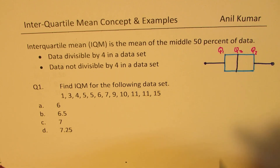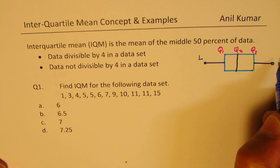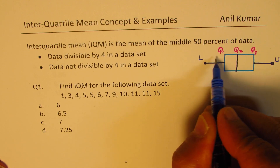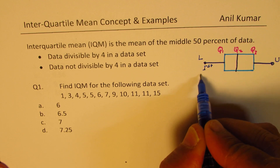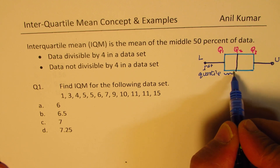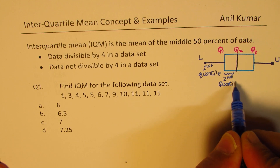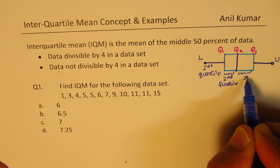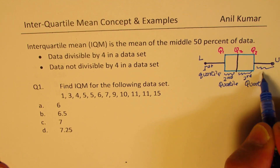In these quartiles, we see that this portion is the first quartile — from the lowest to Q1 — that is our first quartile. Then we have the second quartile, third quartile, and this represents the fourth.